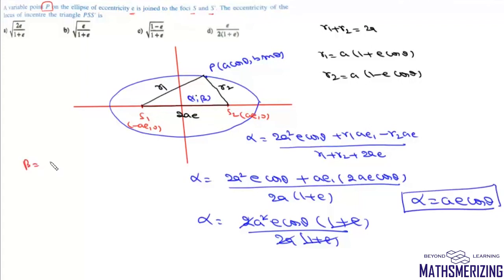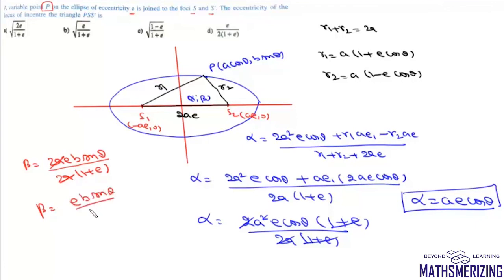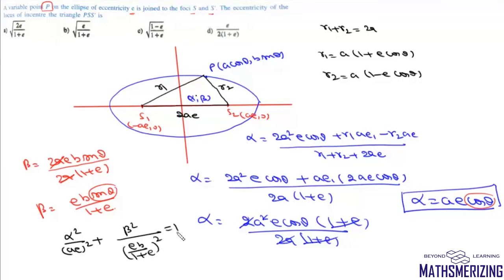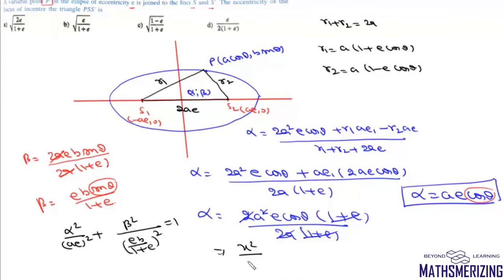For β, we write β = 2ae·b·sinθ/(r₁ + r₂ + 2ae) = 2ae·b·sinθ/(2a(1 + e)) = eb·sinθ/(1 + e). Now we eliminate θ using cos²θ + sin²θ = 1, giving α²/(ae)² + β²/(eb/(1+e))² = 1. So the locus of the incenter is x²/(ae)² + y²/(eb/(1+e))² = 1.